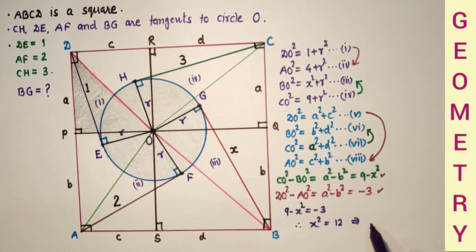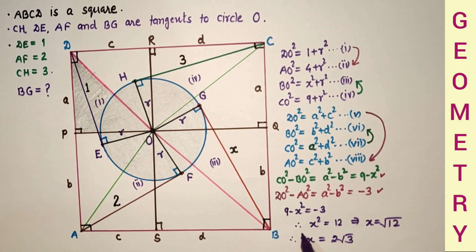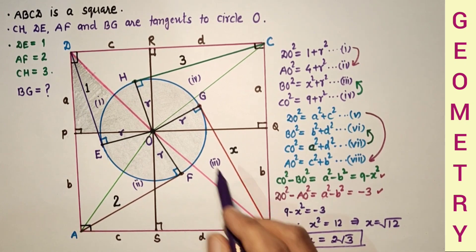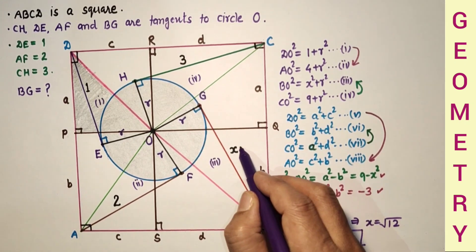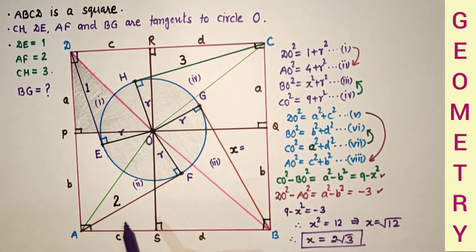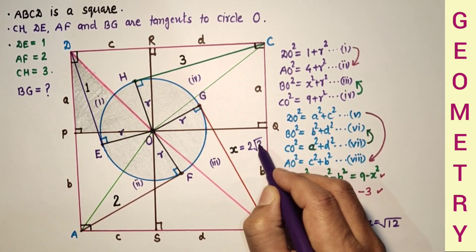So X = √12 = √(4 × 3) = 2√3 units. Therefore the length of tangent BG is 2√3 units, and that is the answer.